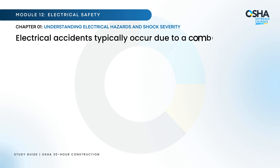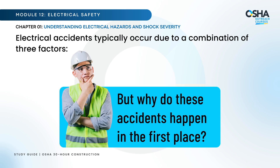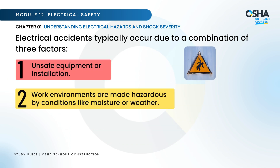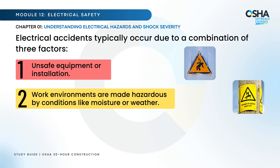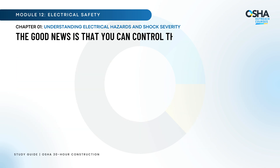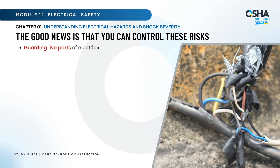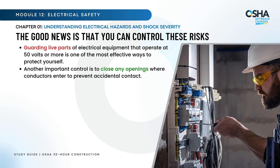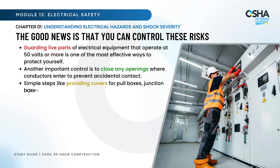Electrical accidents typically occur due to a combination of three factors: unsafe equipment or installation; work environments made hazardous by conditions like moisture or weather; and unsafe work practices, such as not using proper protective gear. The good news is that you can control these risks. Guarding live parts of electrical equipment that operate at 50 volts or more is one of the most effective ways to protect yourself. Another important control is to close any openings where conductors enter. Simple steps like providing covers for pull boxes, junction boxes, and fittings can make a big difference.